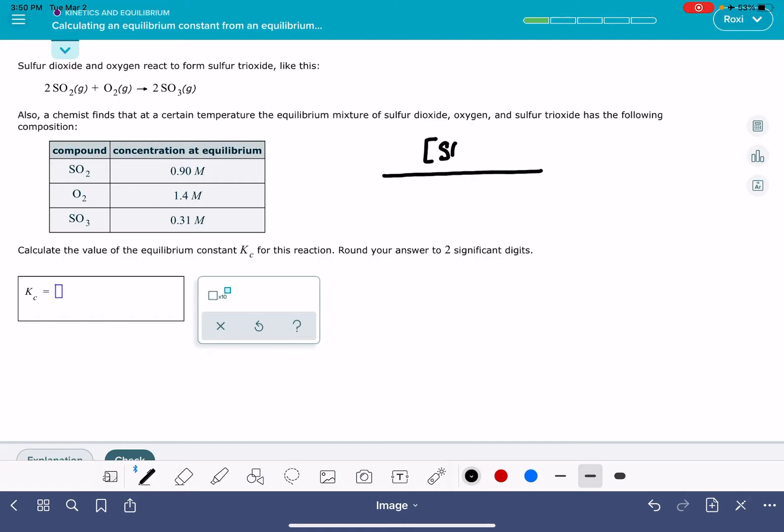We're going to use the square bracket notation, which means we're entering the molarity of SO3. And because the stoichiometric coefficient of SO3 is 2, we'll be raising this to the power of 2.